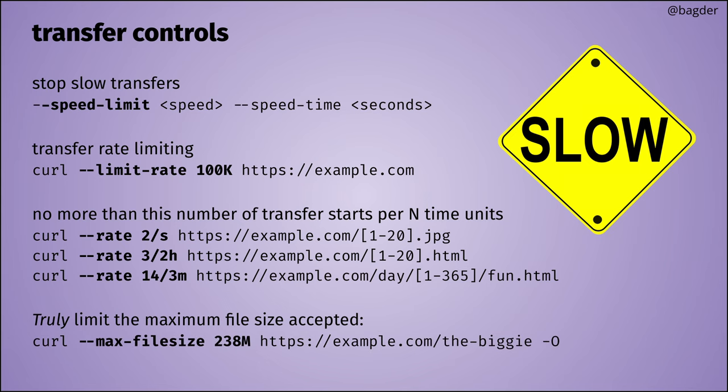You can also truly set the maximum file size now. Back in the day this didn't always work, but with a modern curl if you set --max-file-size to, say, 238 megabytes, you know curl will never let the downloaded file grow larger than that on disk. If something bigger arrives, it's an error — fail, abort, get out. This prevents surprises when you don't know how big a file might be.